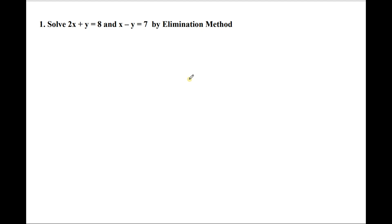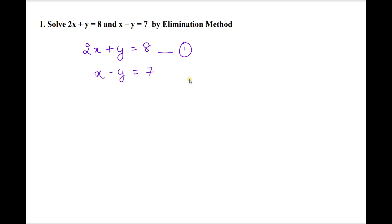The first question: solve 2x + y = 8 and x − y = 7 by the elimination method. The first equation is 2x + y = 8 — take this as equation 1. The second equation is x − y = 7 — this is equation 2.